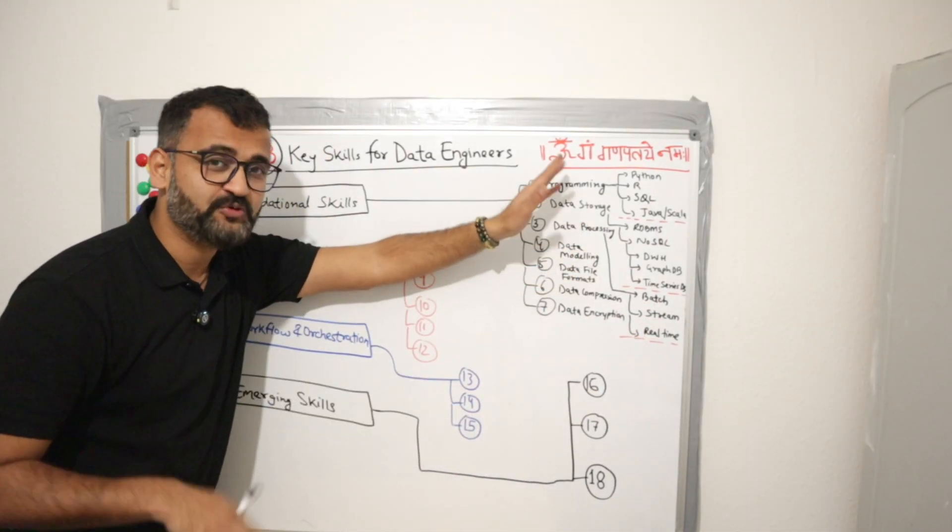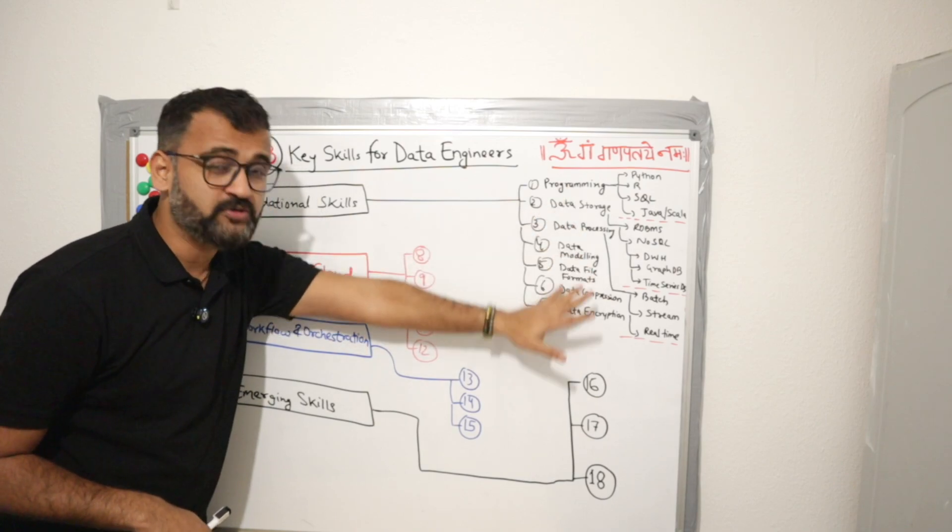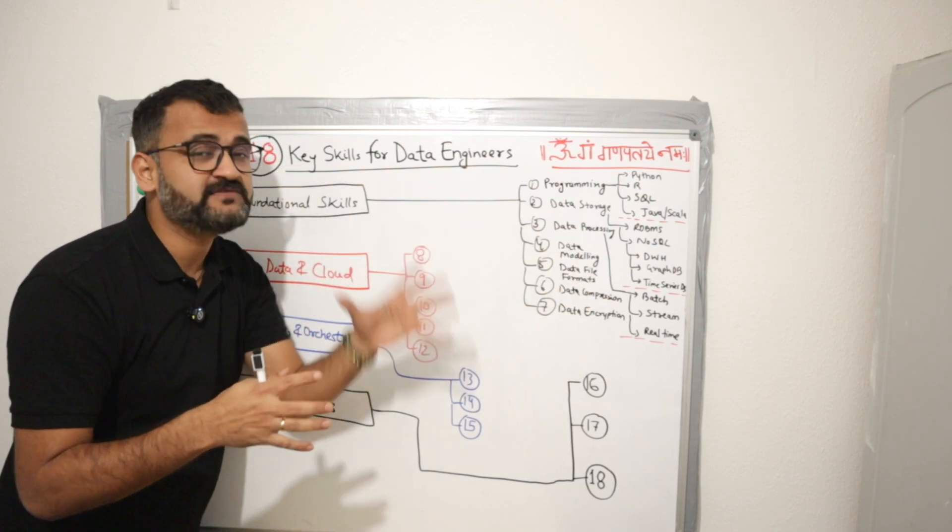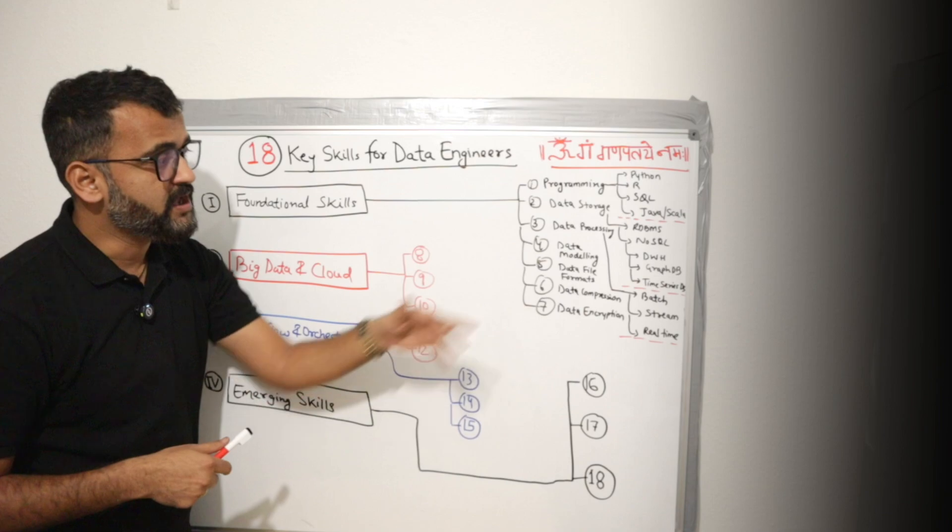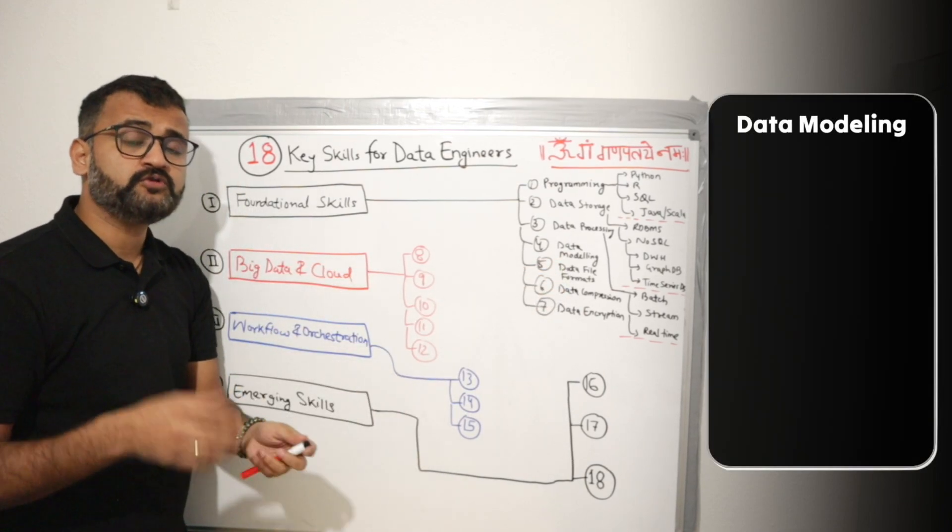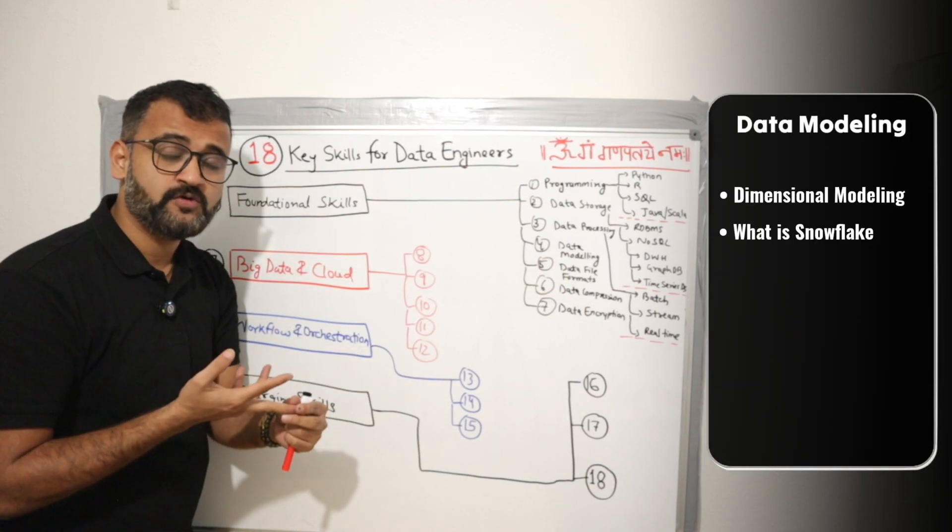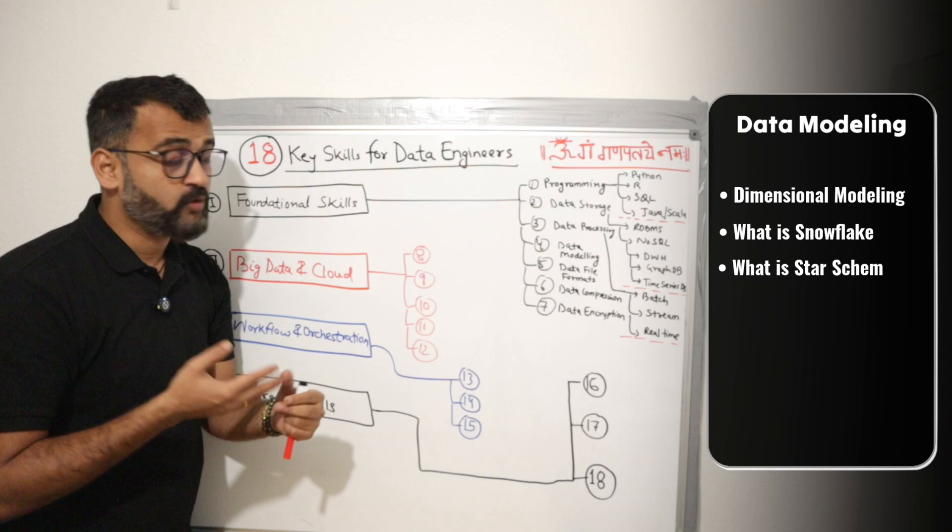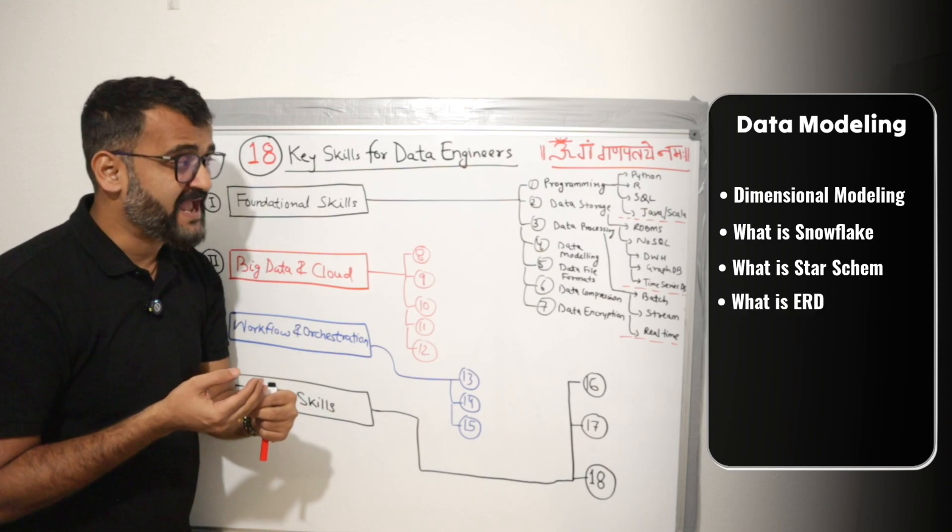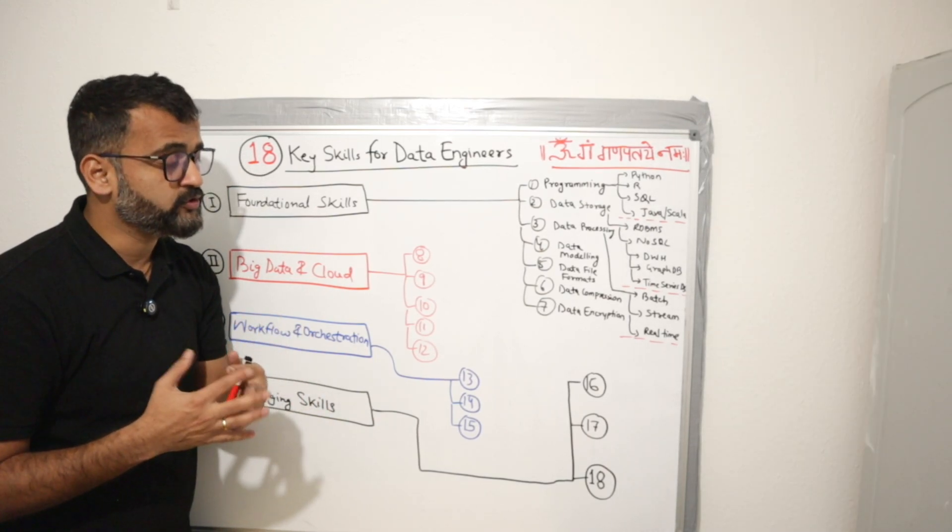And don't get overwhelmed guys. You don't need to be master of it, but know this and try to get grip of some of these concepts starting with whatever comes easy to you. Data modeling is very important. You need to know dimensional modeling. What is snowflake? What is a star schema? What is entity relationship diagram and modeling? So all those concepts should be known to you.